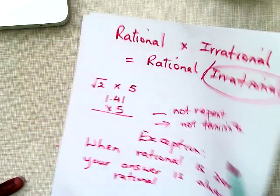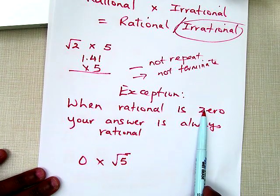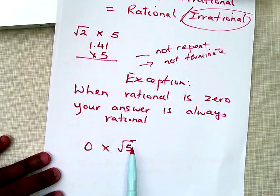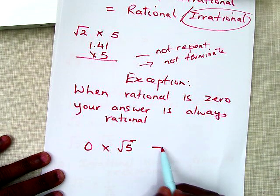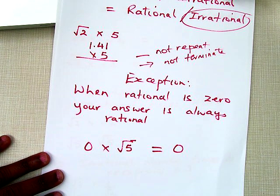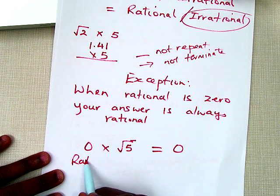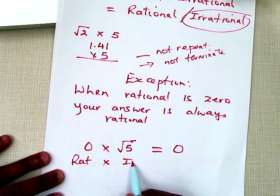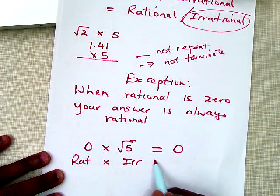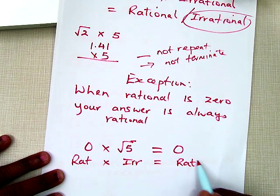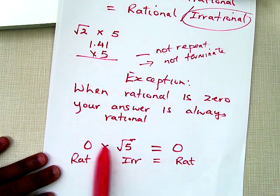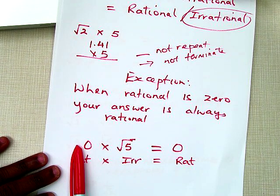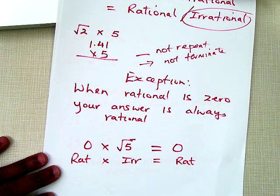When do we get a different answer? When we multiply by 0. If you have an irrational number like square root of 5 and you multiply by 0, you get 0, which is rational. That's the only time rational times irrational gives you rational — when you multiply an irrational number by 0.